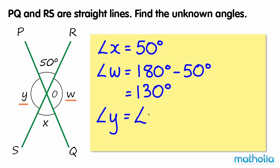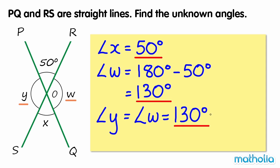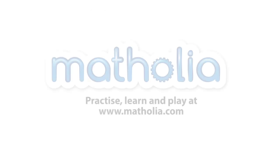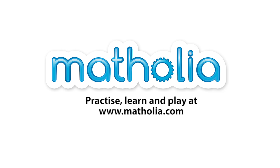So the unknown angles are 50 degrees, 130 degrees, and 130 degrees.